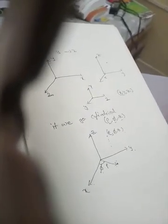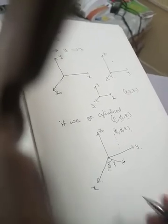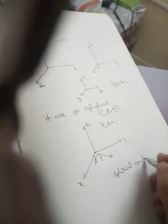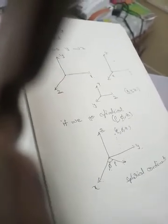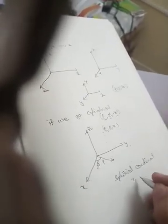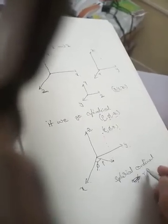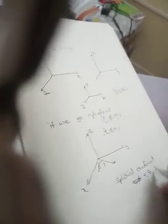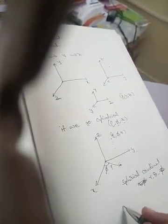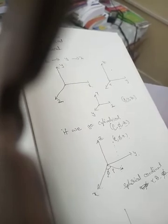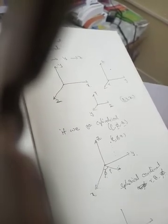Now if we go to spherical coordinates, spherical coordinates, then the point is represented by r, θ, and φ. Now if you observe a sphere...